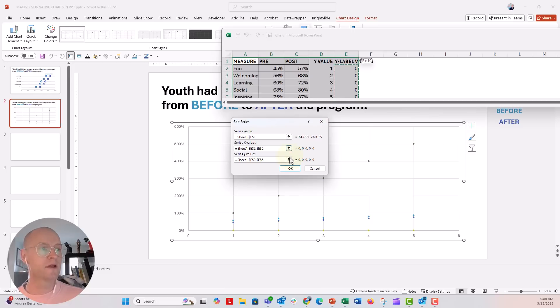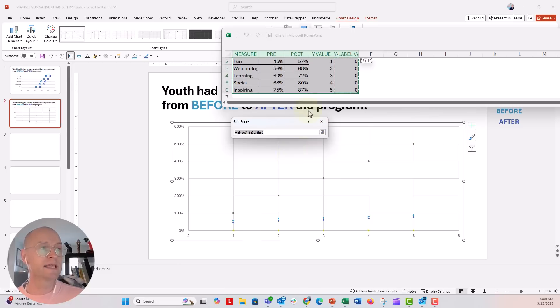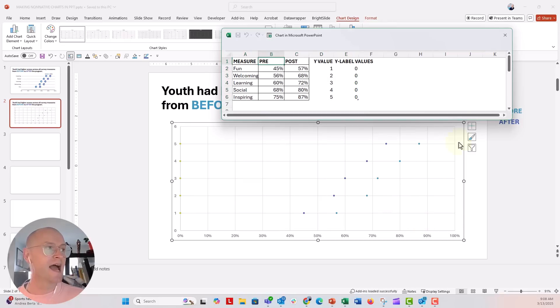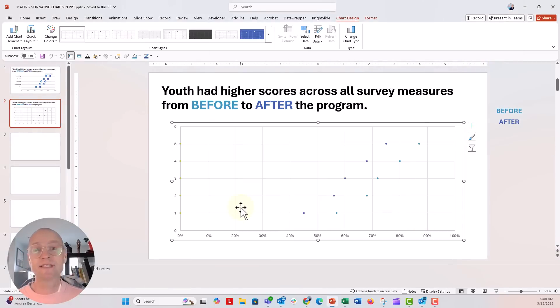And the Y values, again, we're going to put on column D. So everything is pointing, all the Y values are pointing to that column. Now I'm going to click OK and close out of the window. You can see this is the dot plot that we normally have over in Excel.